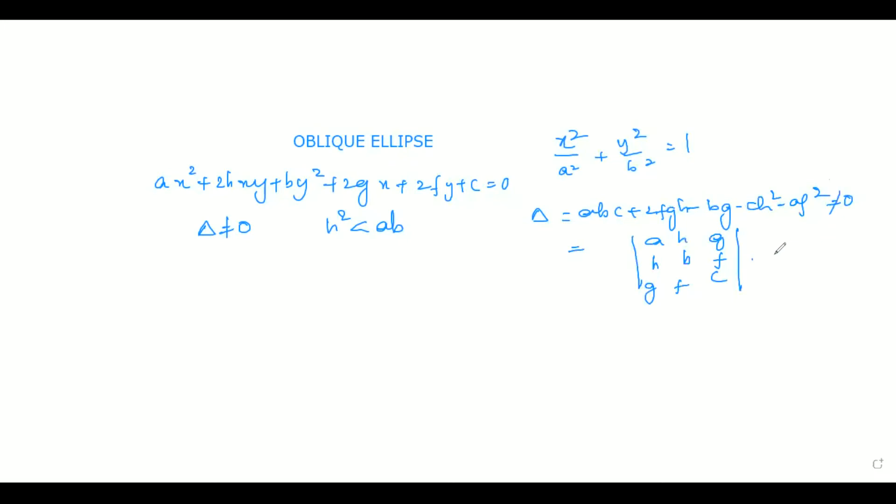If this equals 0 and simultaneously H squared is less than AB, then the given equation will represent ellipse. So with all these terms, it will represent an oblique ellipse. So right now we are going to discuss about oblique ellipse and how to find the terms related to that ellipse.